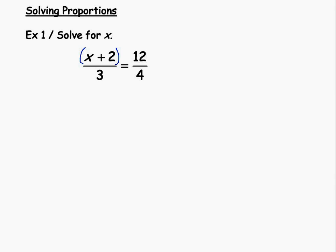So to solve this, we'll cross multiply. That would be x plus 2 times 4. That would be one of our cross products. I'm going to write it this way, 4 times x plus 2. Again, parentheses are really important there. And that will be equal to the other cross product, which is 3 times 12, or just 36.